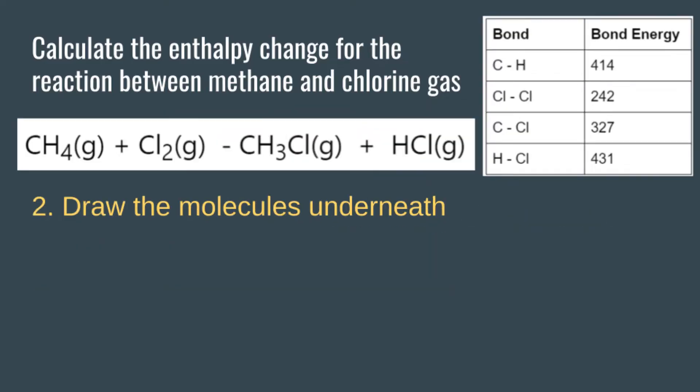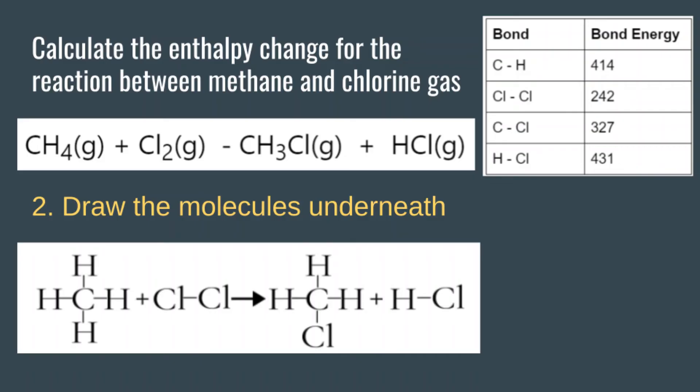The second step is to draw the molecule structure underneath. This will show us what bonds there are in each reactant and product. Here we have the structure for methane, chlorine gas, chloromethane, and hydrochloric acid. We can now clearly see what types of bonds there are in each molecule.